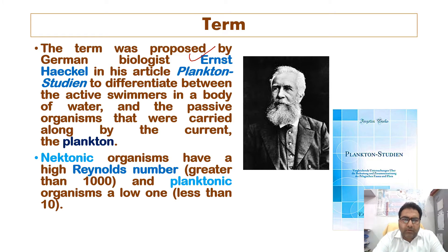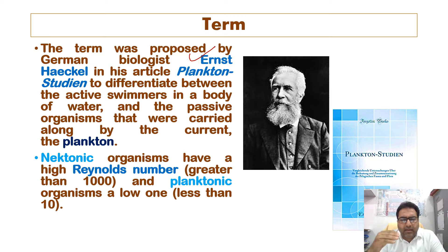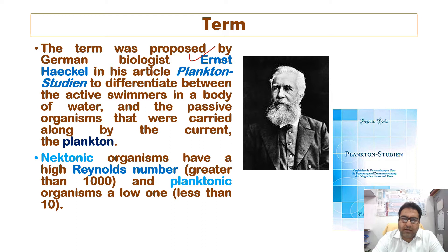Some organisms can begin life as plankton and transition to nekton later in life, making classification difficult. For some species, they spend the earlier part of their life as plankton and change to nekton in the adult stage — the larvae are plankton and the adults are nekton. This makes it difficult for taxonomists to classify, and for this reason some biologists choose not to use the term at all.